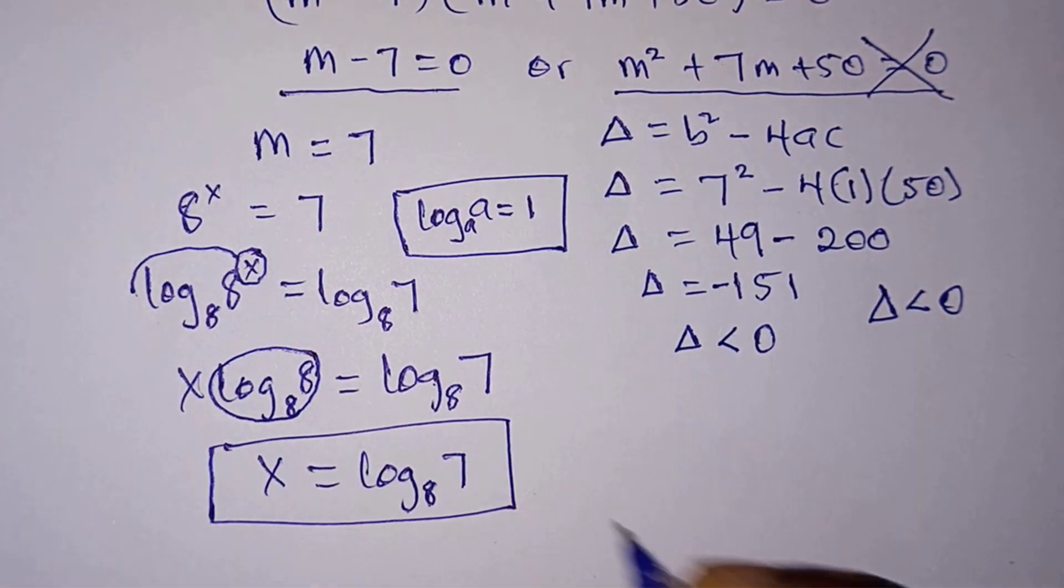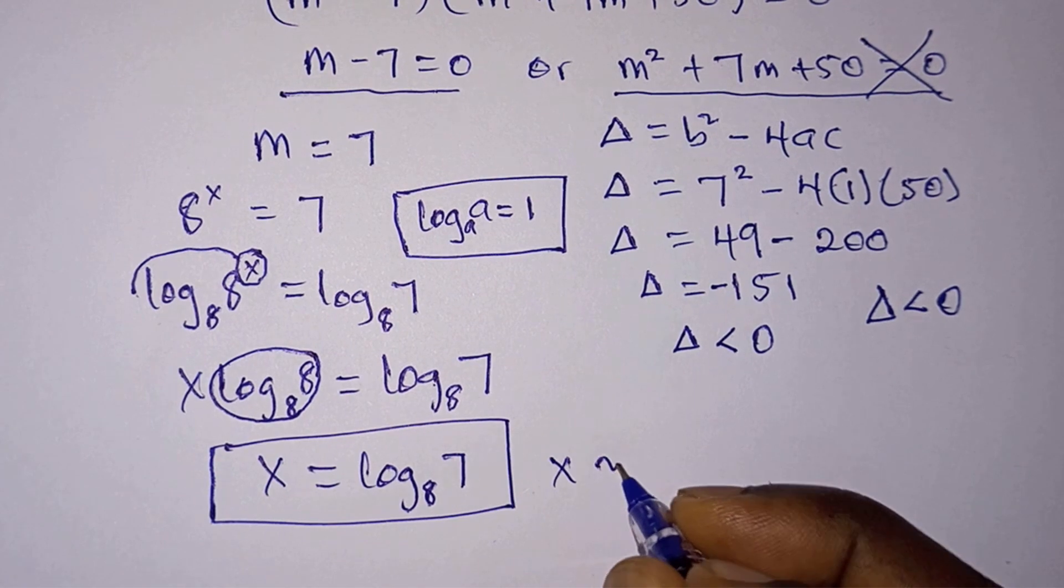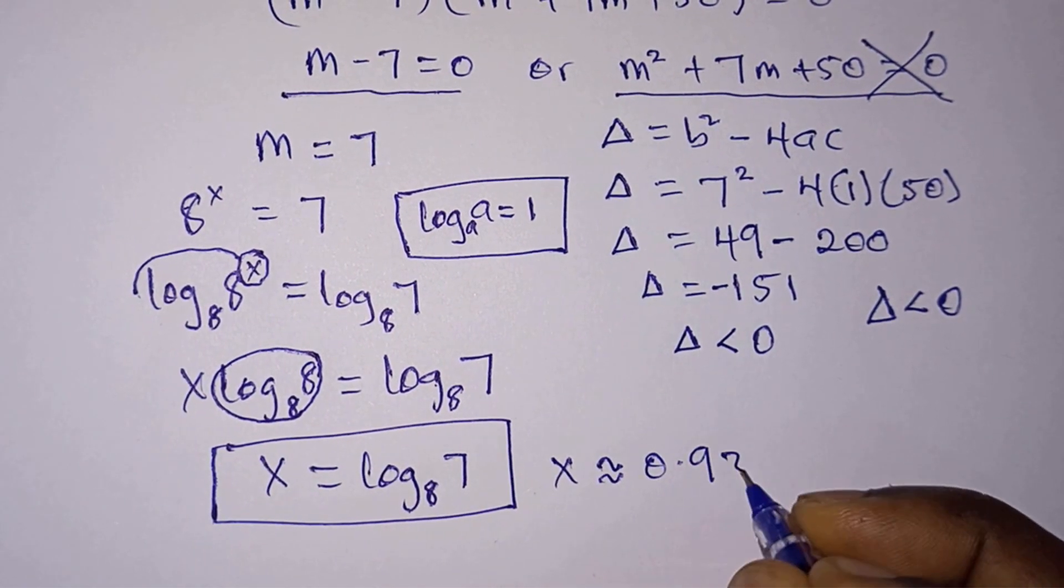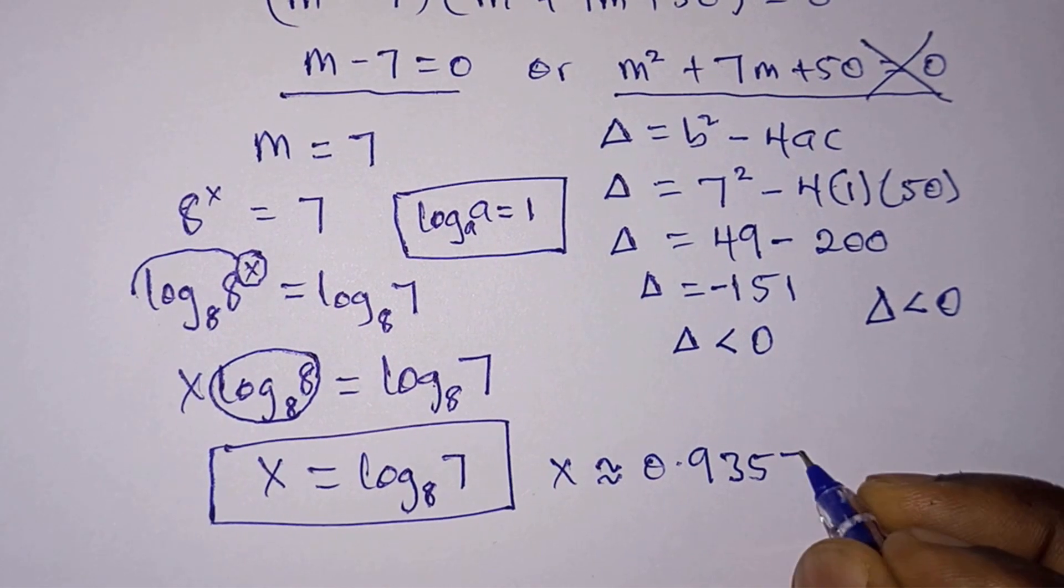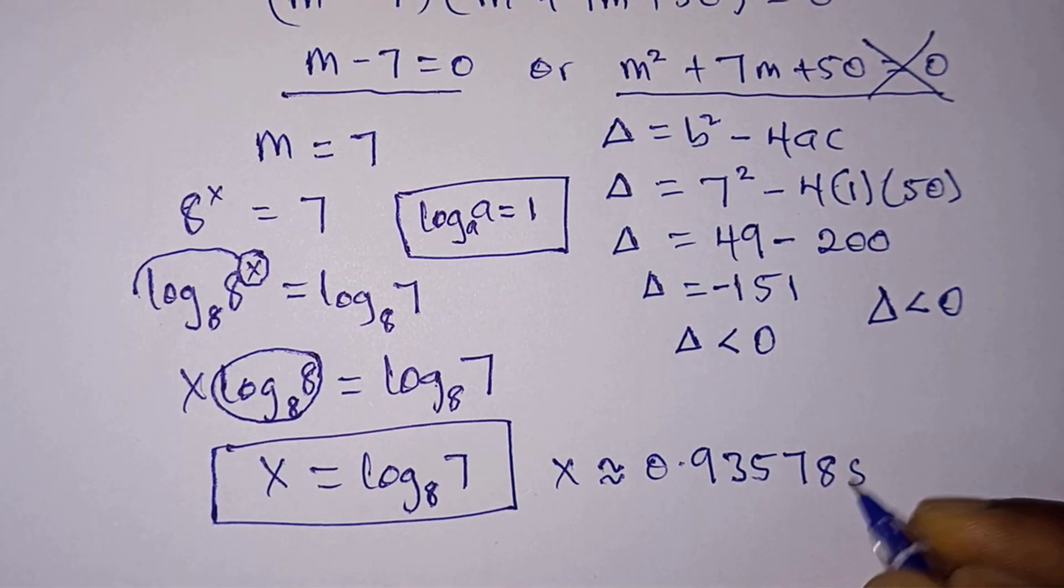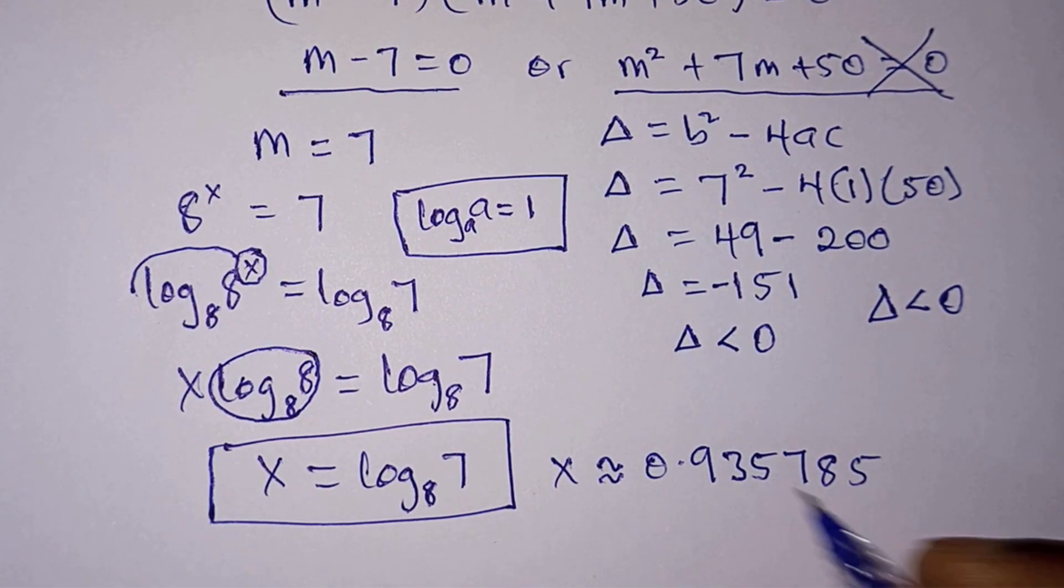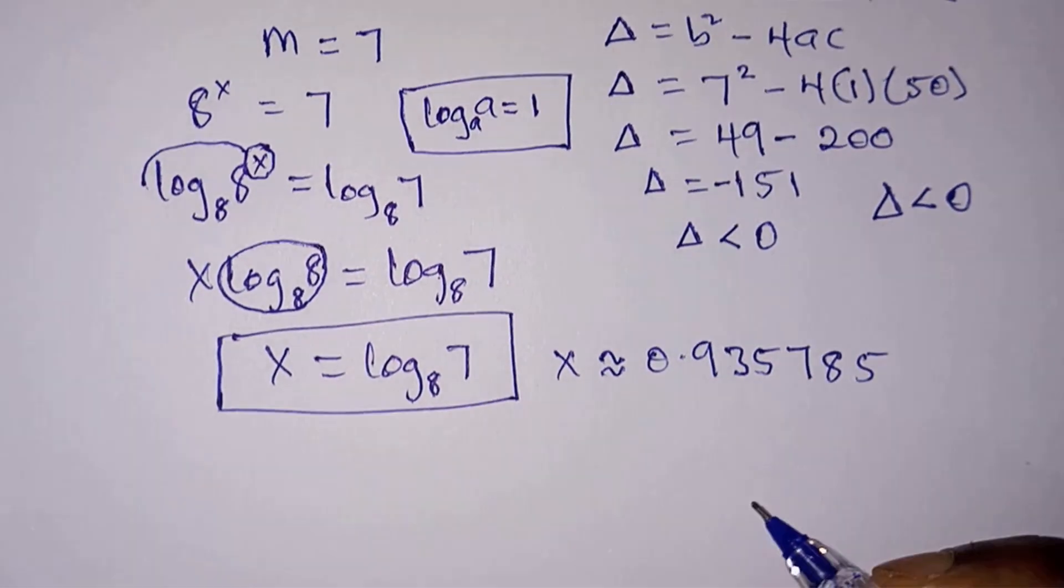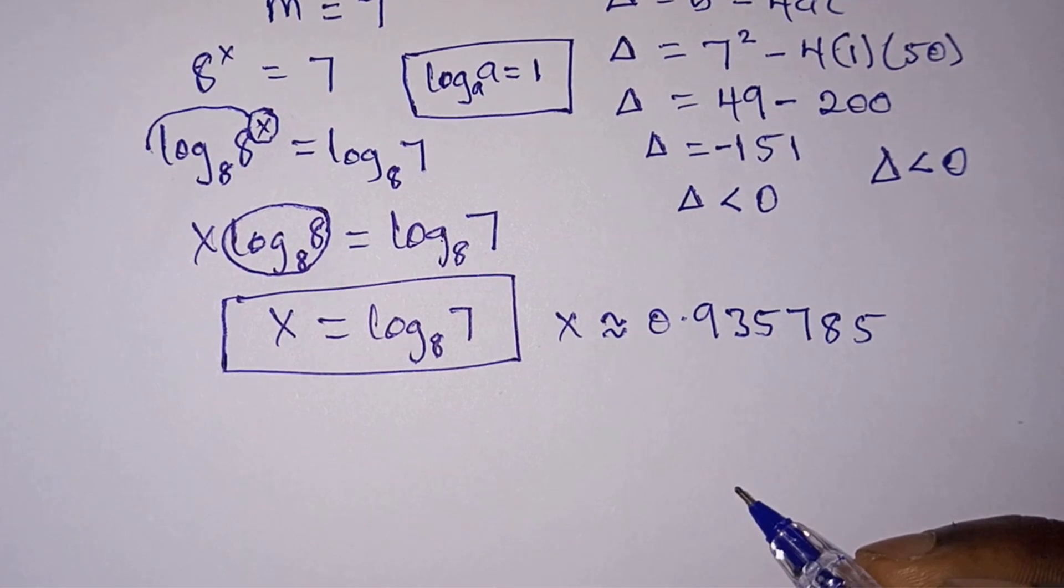Now if you use a calculator for this, you will get x approximately equal to 0.935785. So approximately this is the value of x. Now let's go ahead and test our answer to see whether it satisfies the original equation.